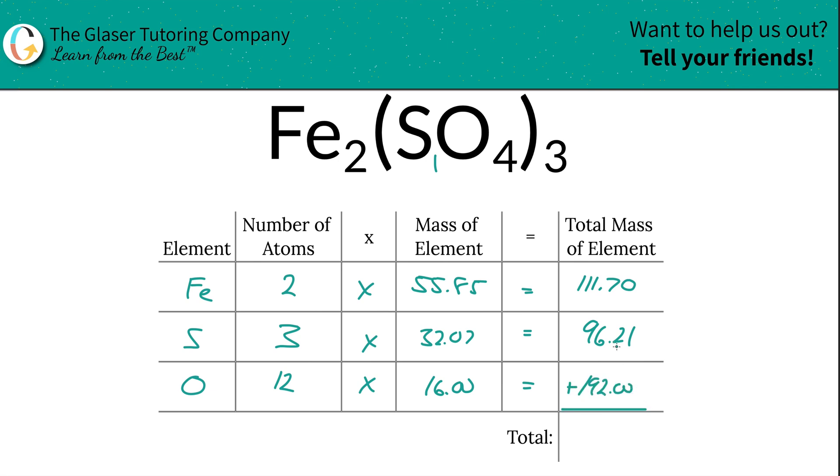So then to find the total mass of the entire compound, guess what we've got to do? Just add up all the total mass of each element, right? So this is going to work out to be 399.91. Since we're solving for molar mass here, the units are in grams per mole, and now you know how to find the molar mass of iron 3 sulfate.